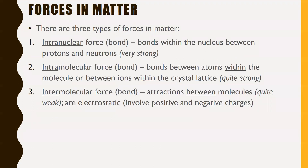For forces in matter, there are three types from a chemistry point of view. The first is the intranuclear force — these are the bonds within the nucleus between protons and neutrons, and this is very, very strong. In Physics 30 this is called the weak nuclear force, which is a misleading name because it's actually very strong; it's just not as strong as the strong nuclear force.